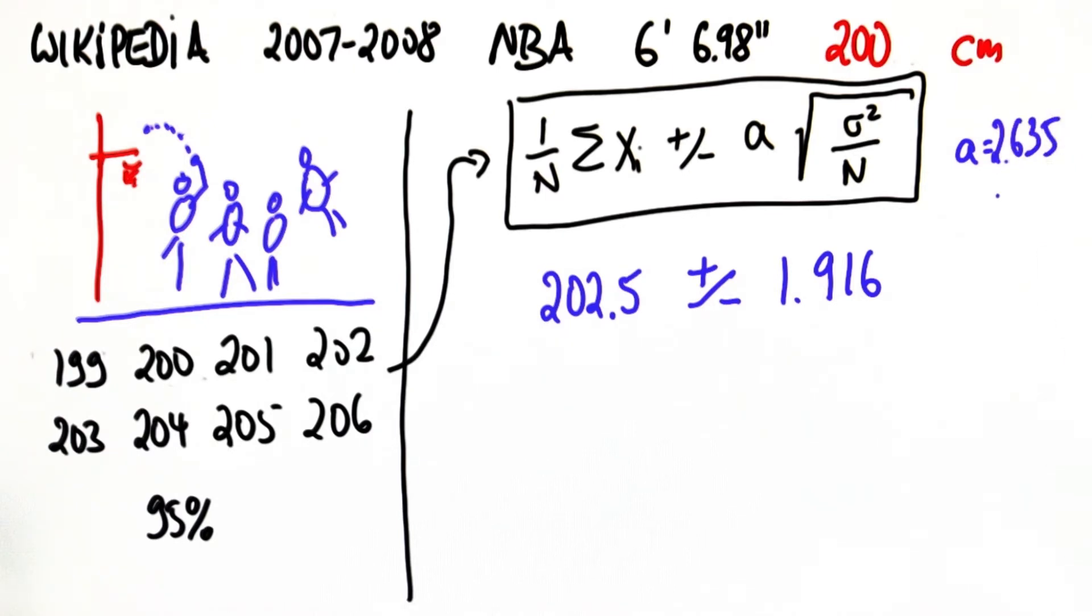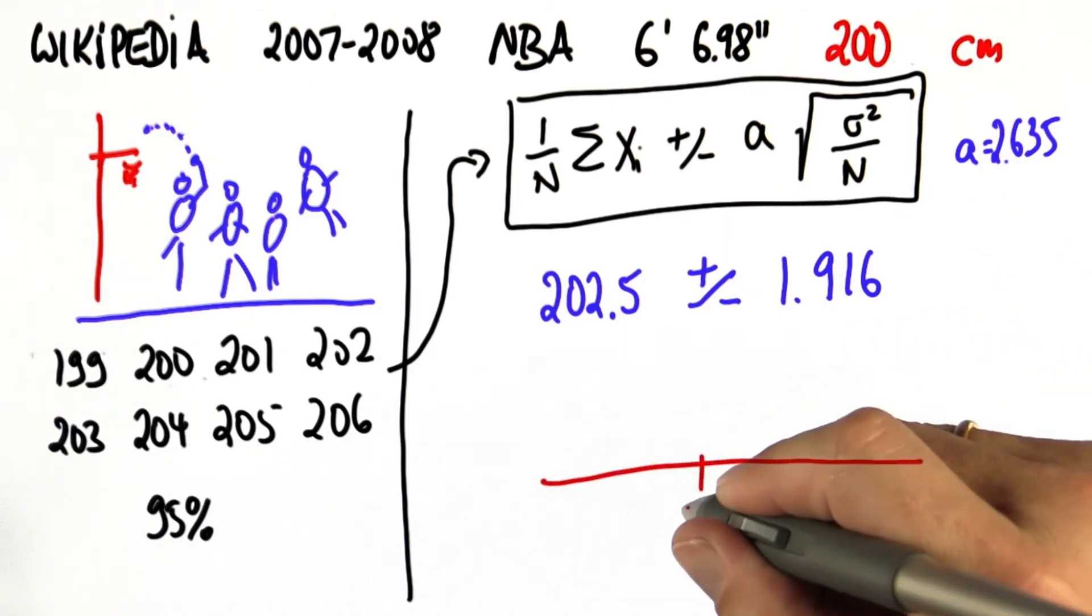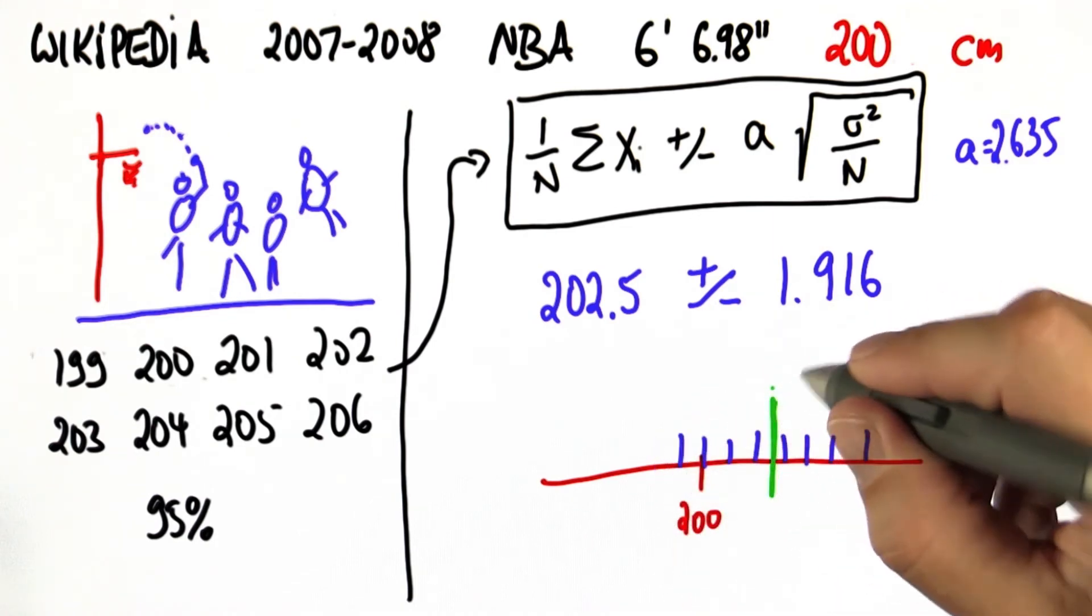If you want to check this, I'm using 2.365 for a. Graphically, what this means is if here is the 200 and here are my data points, the mean measurement of the sample sits over here.